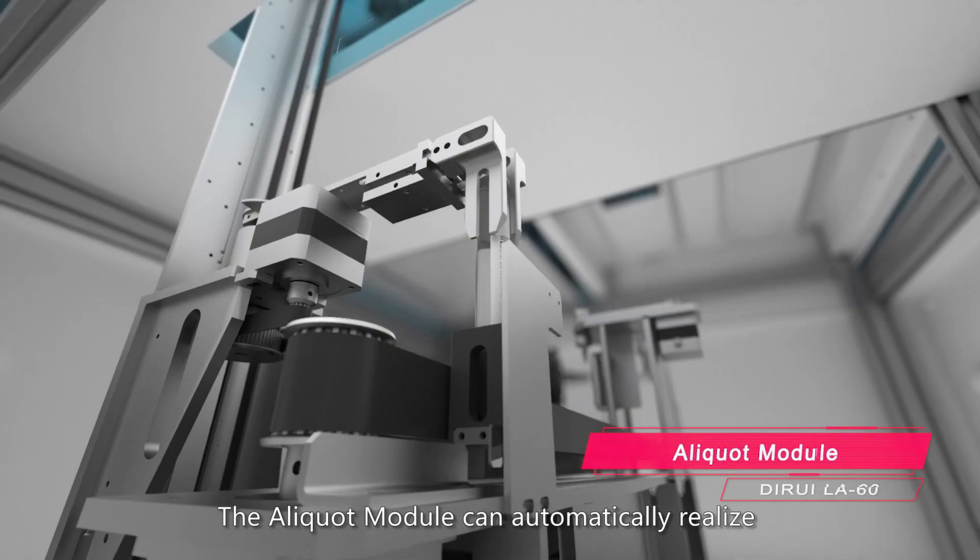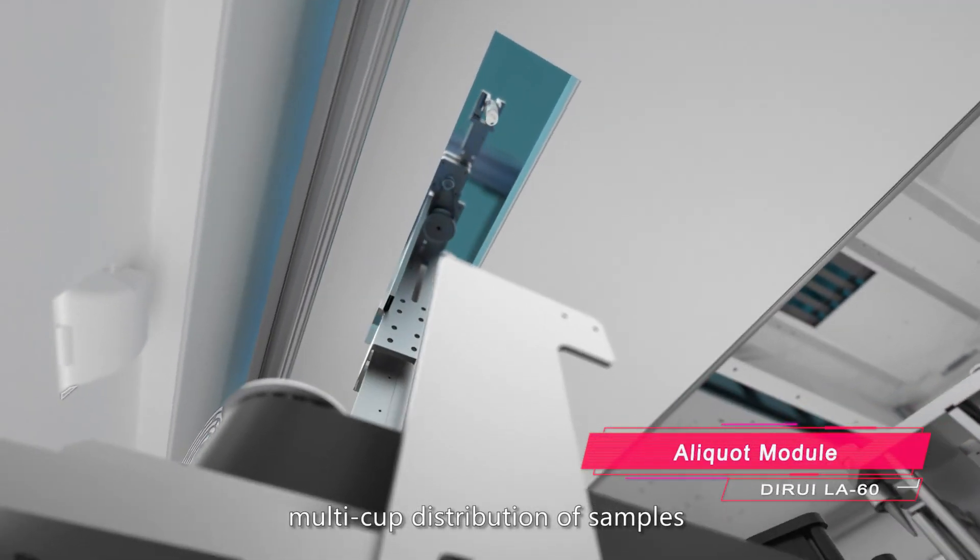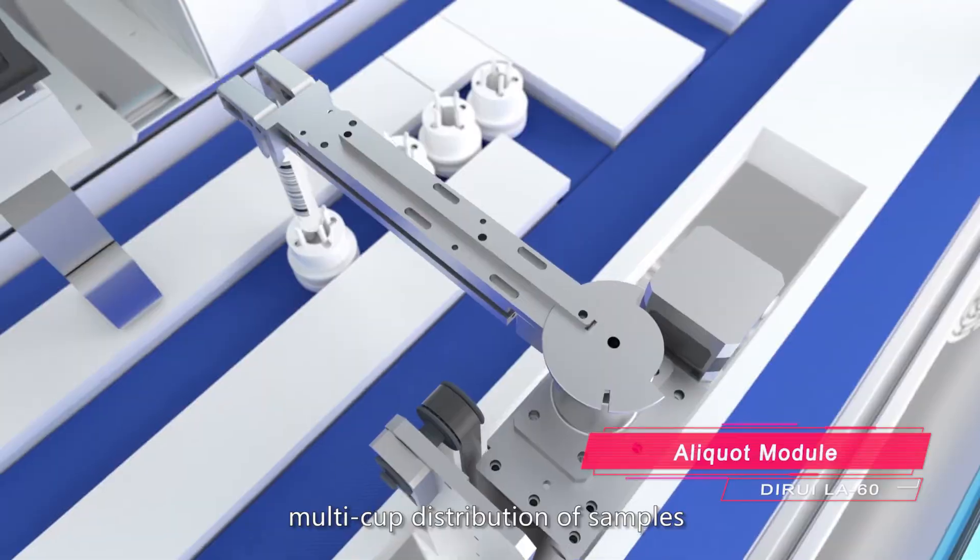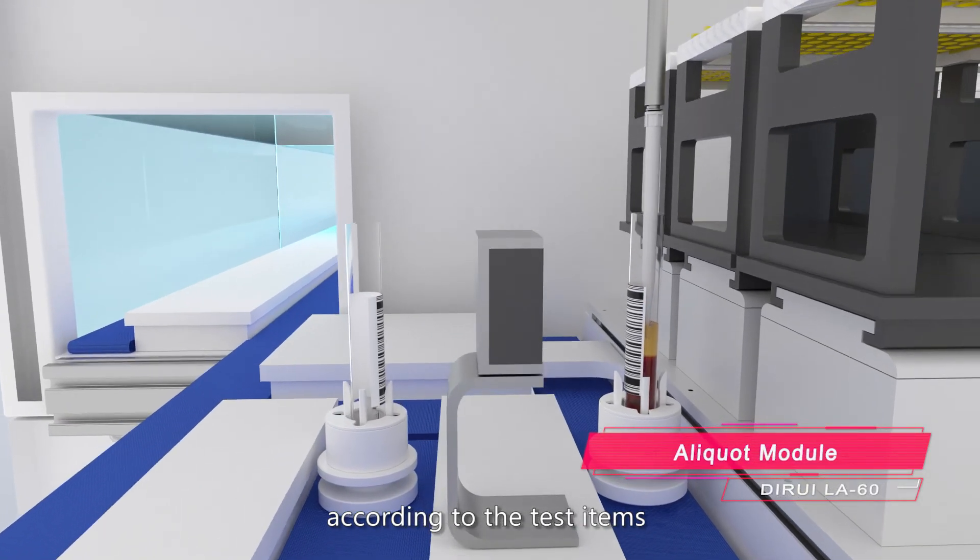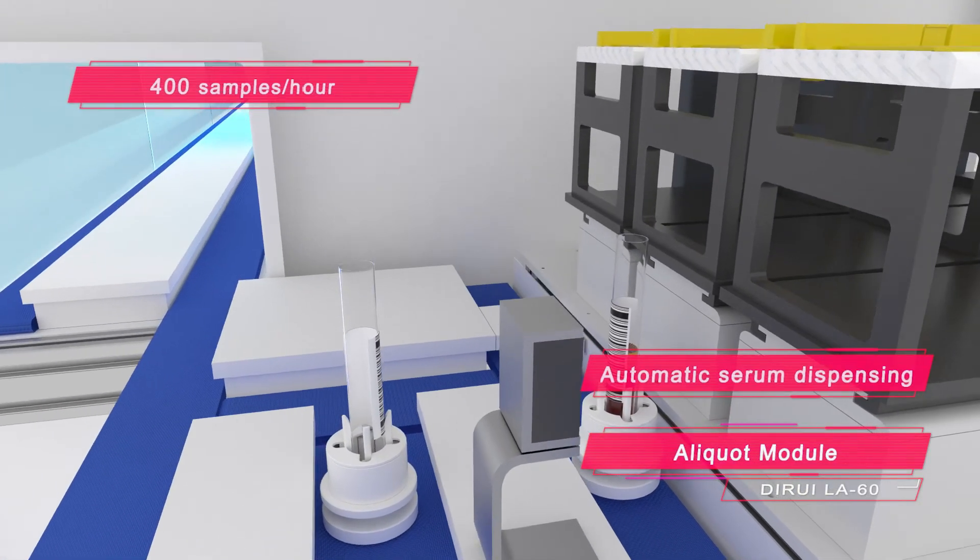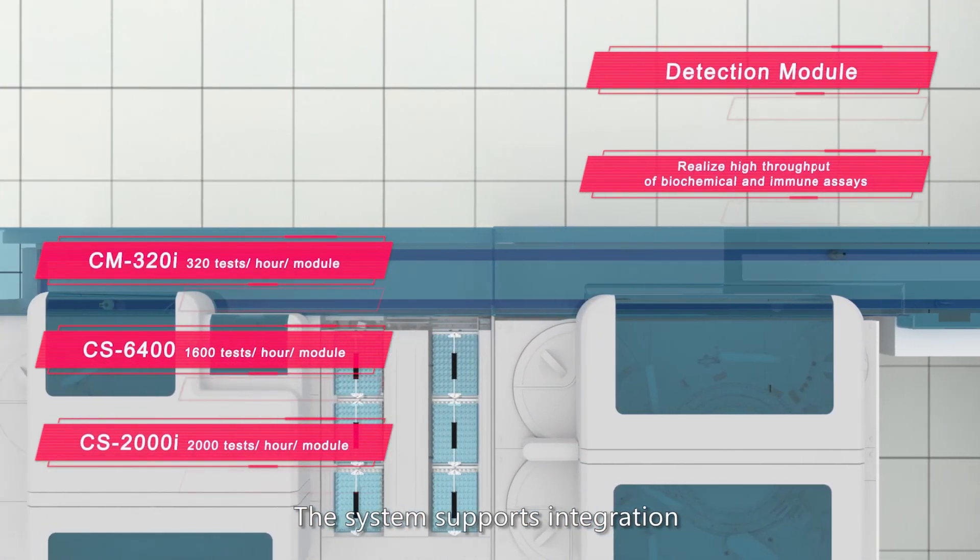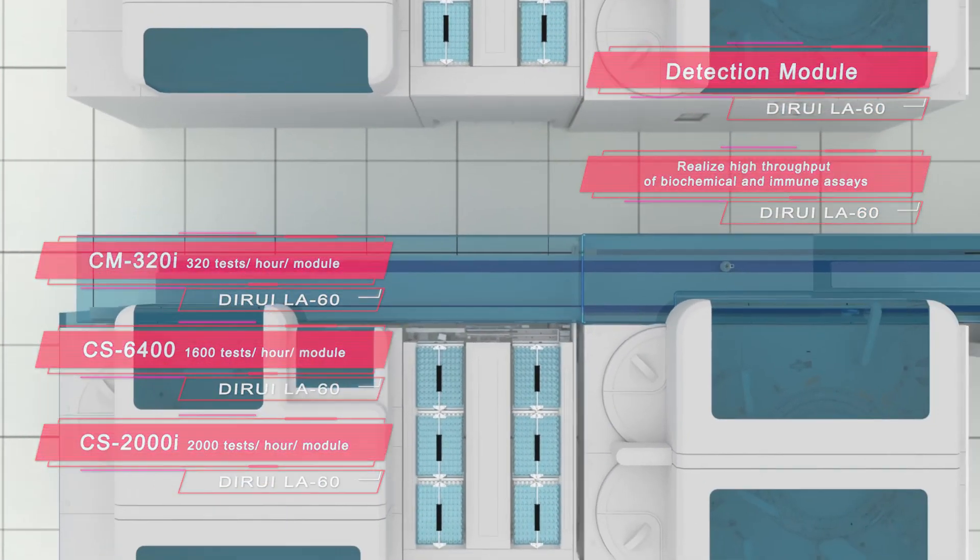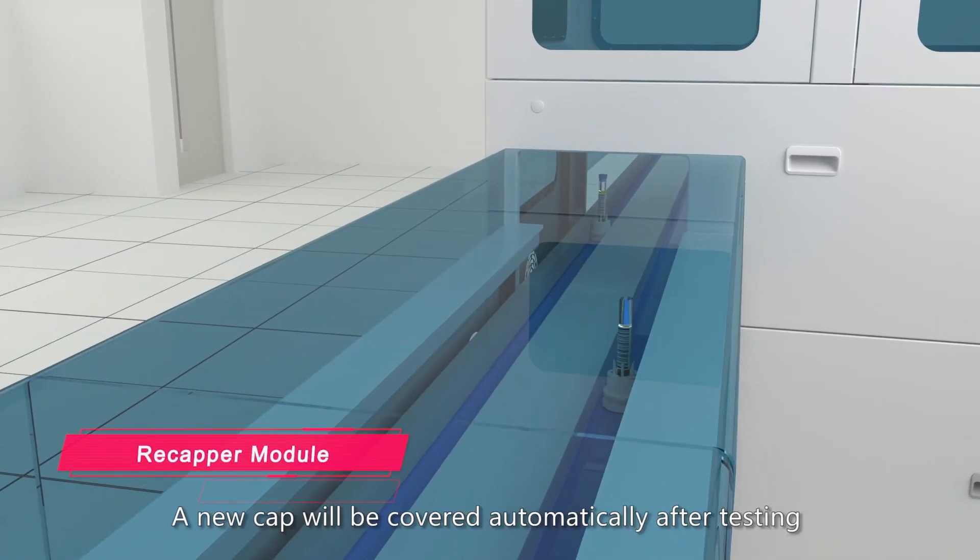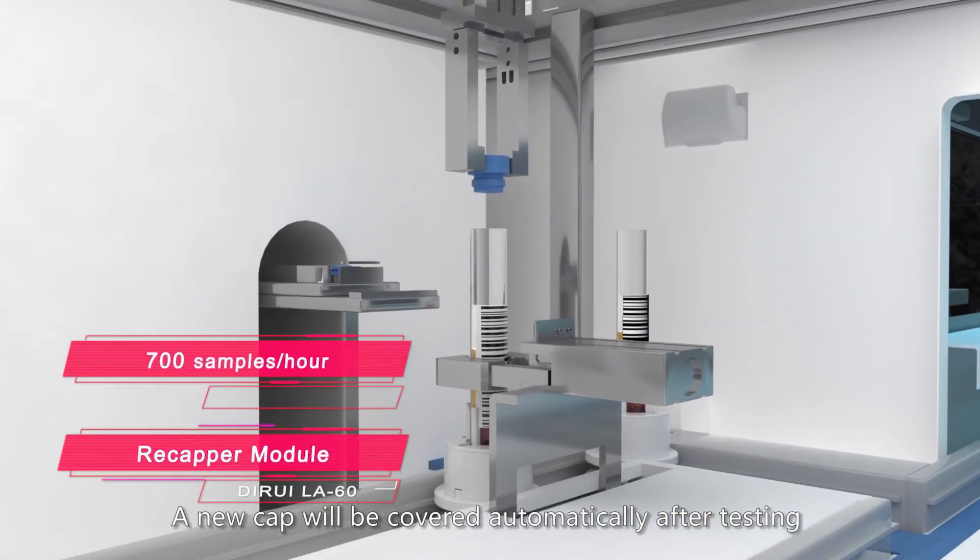The aliquot module can automatically realize multi-cup distribution of samples according to test items. The system supports integration. A new cap will be covered automatically after testing.